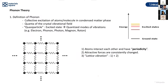What is a phonon? The definition of a phonon is a collective excitation of atoms or molecules in a condensed matter phase, or a crystal vibrational field. A phonon is a quasi-particle — the excited state of a quantized mode of vibration. Examples of quasi-particles include electrons, phonons, photons, and magnons.